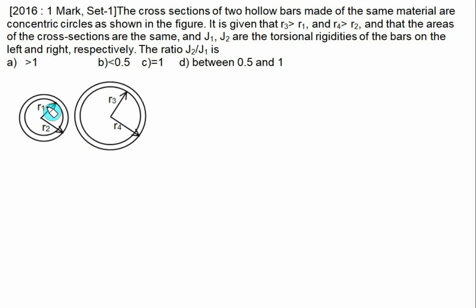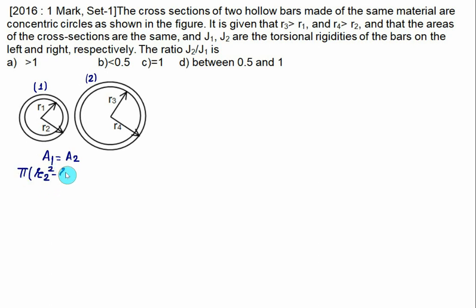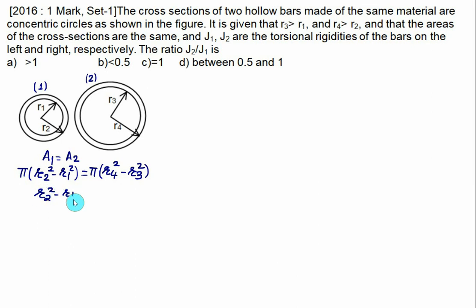Label the left bar as 1 and the right as 2. Since area A1 equals area A2, and r2 > r1 while r4 > r2, we write: π(r2² − r1²) = π(r4² − r3²). The π terms cancel, leaving r2² − r1² = r4² − r3².